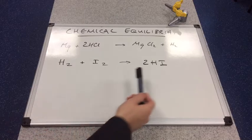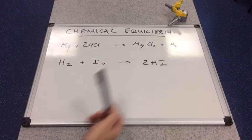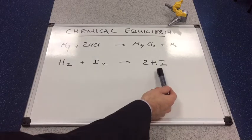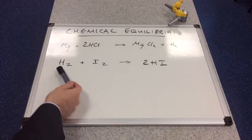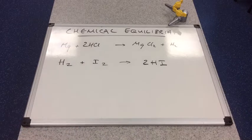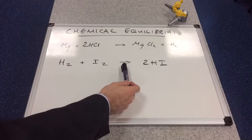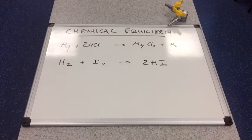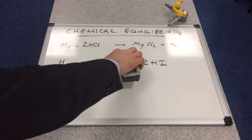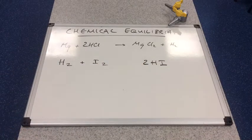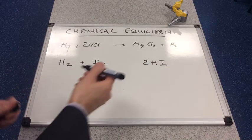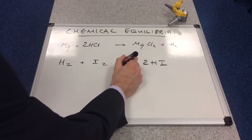In other words, the HI, as soon as it's formed, will break up and form hydrogen and iodine. So we don't use a single direction arrow in this equation. We use the reversible arrow which is drawn like this.